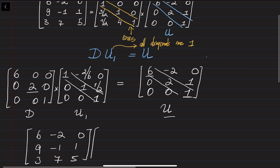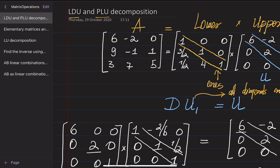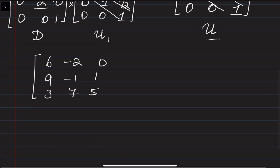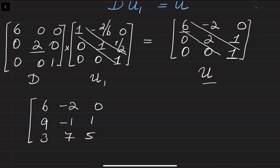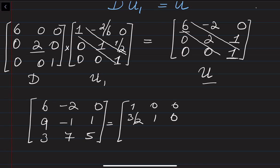This is equal to the L matrix, which is: one, zero, zero; three over two, one, zero; one over two, four, one.